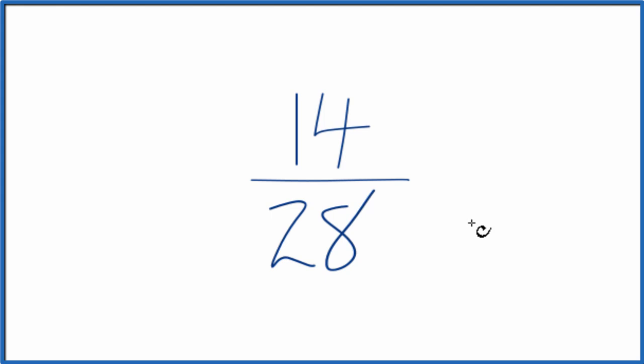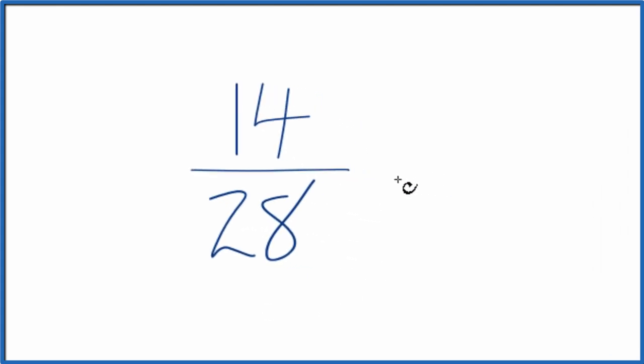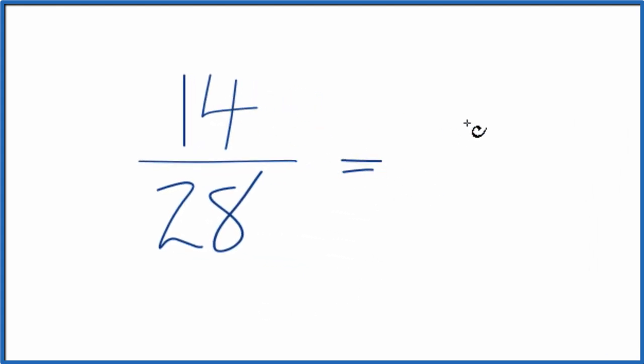So to do that, we need to find a common factor. We're really looking for the greatest common factor. 14 actually goes into 28 evenly. So if I divide 14 by 14, that's just 1. If I divide 28 by 14, that's 2.